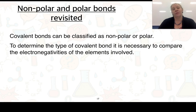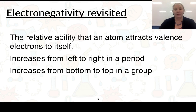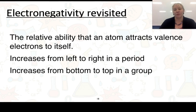We need to revisit non-polar and polar bonds quickly. To determine the type of covalent bond, it's necessary to compare the electronegativities of the elements involved. Electronegativity is the ability that an atom has to attract valence electrons to itself, and it increases from left to right in a period and from bottom to top in a group.